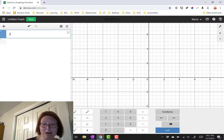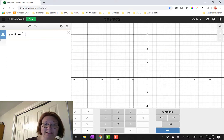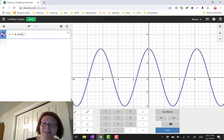I'm going to start by inputting y equals 4 and then the functions menu holds all those trig functions. So I'll choose cosine from there and then the x gets inserted into the parentheses.